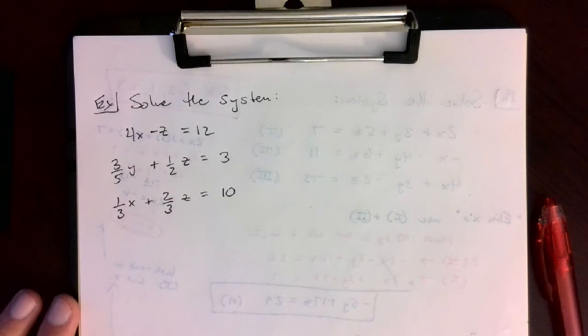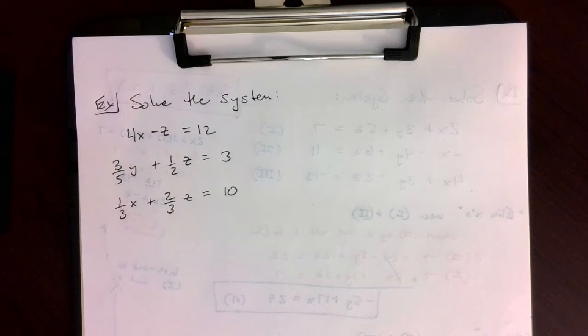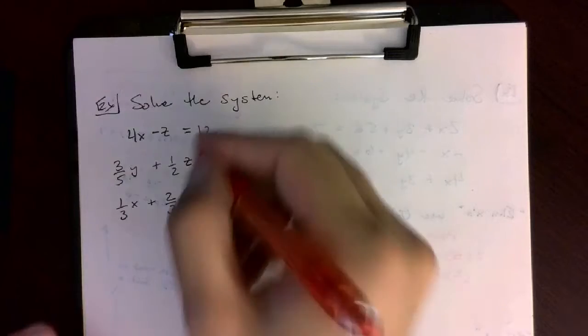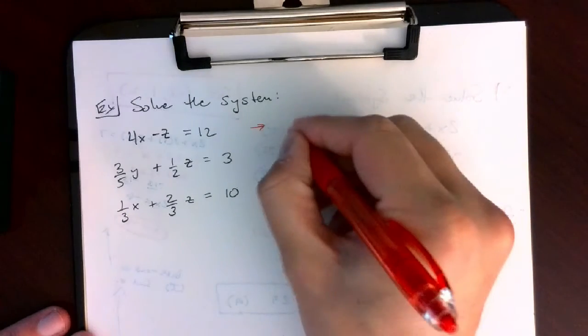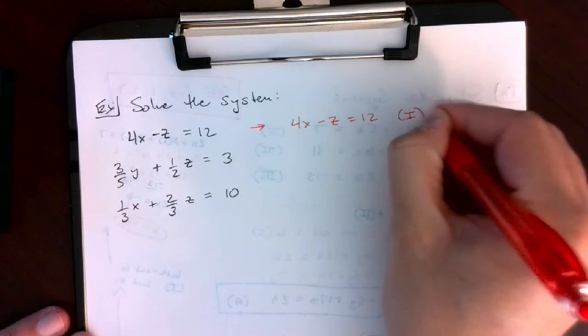To solve this, the first thing I would do is eliminate the fractions because they make it harder to work with. Whenever you have an equation with fractions, you want to clear fractions by multiplying by the LCD. The first equation here I don't have to manipulate at all. I'm going to keep it as 4x minus z equals 12 and label it equation 1.